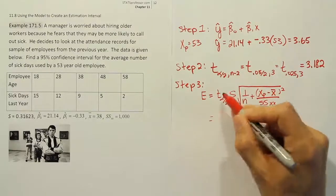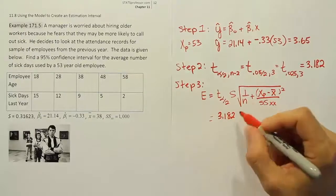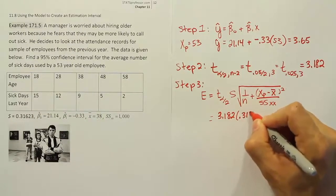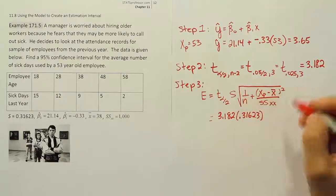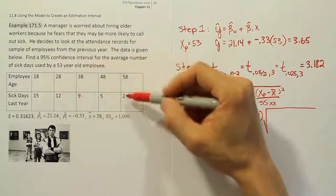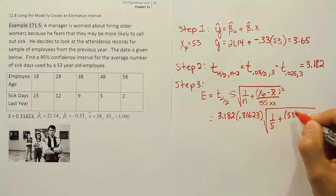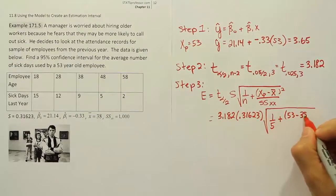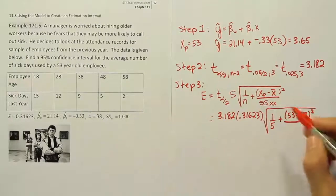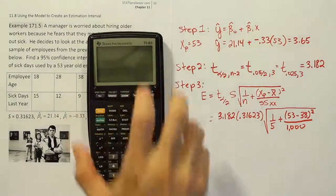We're going to plug in some numbers. T alpha divided by 2 becomes 3.182. S was provided in the problem, it's 0.31623. Then we'll multiply by the square root of 1 over n. Our n was 5 because there were 5 data values. That's 1 over 5 plus xp, the number we're making the prediction at, that's 53 minus x bar. They tell us x bar is 38. Close that up, hit the square, and then divide by ssxx, which is 1,000. It's very nice of them to give us all that information. Let's work out this margin of error.